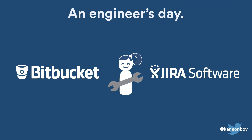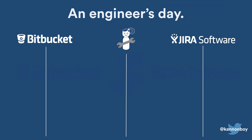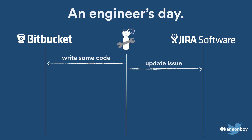If you're using Bitbucket to host your code and Jira to track your issues, your engineer will spend a good amount of their day writing code, updating issues, and reviewing their code changes in Bitbucket. Since we're talking about developers, let's use a sequence diagram to model their interactions with Bitbucket and Jira software. When a developer starts work on a new issue, they might start by writing some code and pushing it to Bitbucket, then go and transition that issue into the in-progress state to show that they've started work.